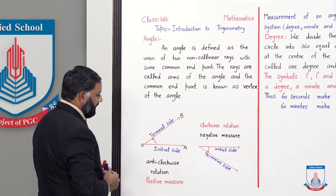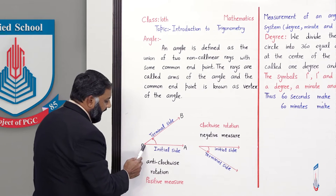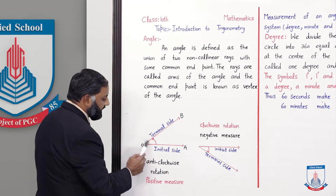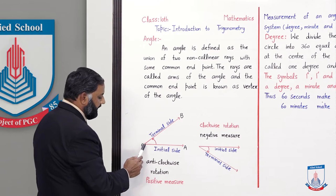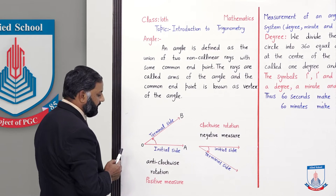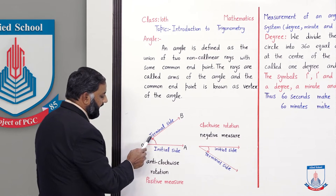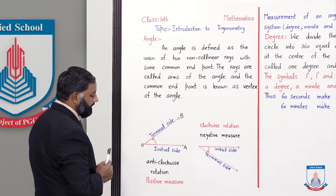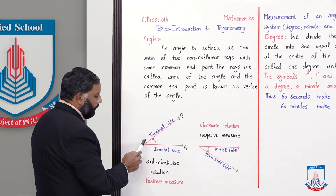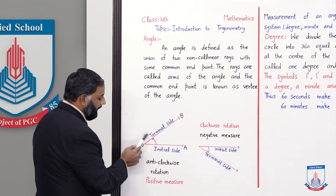The common end point is O. OA is one ray and OB is another ray — this angle is formed by the union of these two rays. Now, the important point: where rotation starts is called the initial side, so OA is the initial side. The initial side always lies on the positive x-axis. The ray where rotation ends is called the terminal side. In this angle, the rotation is anti-clockwise.